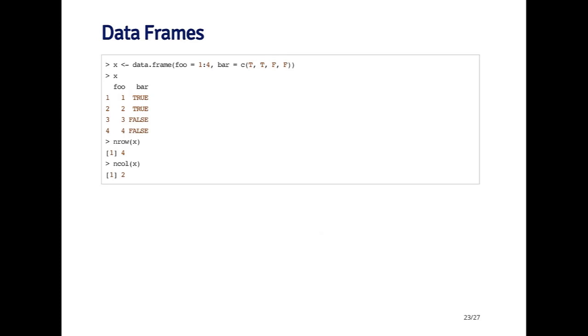Data frames can be created, besides using read.table or read.csv, you can use the data.frame function. Here I've created a very simple data frame where the first column is the foo variable, and the second column is the bar variable. The foo variable is an integer sequence from one to four, and the bar variable is a logical vector with two trues and two falses. When I auto print the data frame out, you'll see it prints out the two columns. Here the row names, since I didn't specify any special row names, it just defaults to one, two, three, four, because it's four rows.